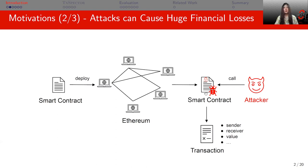After deployment, users, including attackers, can interact with smart contracts by calling functions. Specifically, a call is a transaction which has metadata such as the sender — the user or attacker — the receiver, which is the smart contract, the value to be sent, and so on. Attackers can utilize bugs in the smart contract to launch attacks and cause severe results. Thus, it's important to detect attacks and help users avoid such huge financial losses.